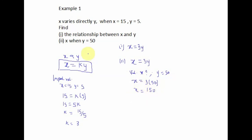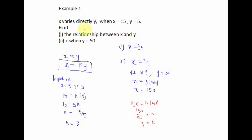We can verify this by checking the proportional constant. When x is 150 and y is 50, we get 150 over 50, which equals k, giving us k is equal to 3. The proportional constant is the same for each corresponding pair of values. As x increases, y also increases — this confirms direct variation.